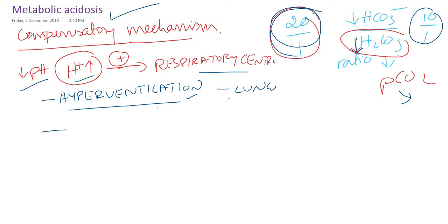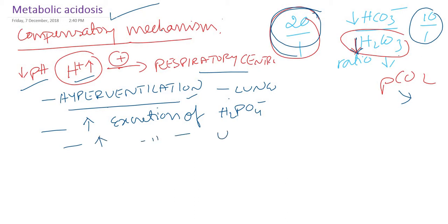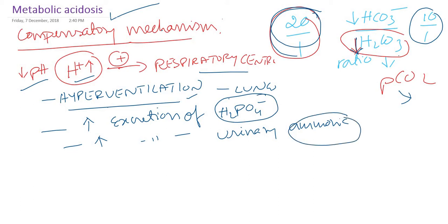The kidney also tries to compensate by increasing excretion of acids. Normally there will be increased excretion of phosphoric acid and also increased excretion of urinary ammonia. The kidney tries to remove acids in one way or another, so that there is less acid load in the blood.